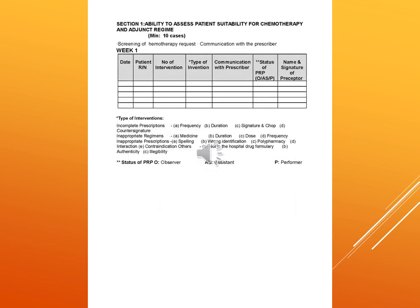Section 1 covers the ability to assess patient suitability for chemotherapy and the appropriate dosage forms, including screening of chemotherapy requests and communication with the prescriber. The PRP must attend a minimum of 10 cases. Week 1 is recorded in a chart that includes date, patient number, number of interventions, type of intervention, communication with prescriber, status of PRP, and name and signature of the preceptor. Type of intervention includes incomplete prescriptions — covering frequency, duration, signature and chop, and countersign.